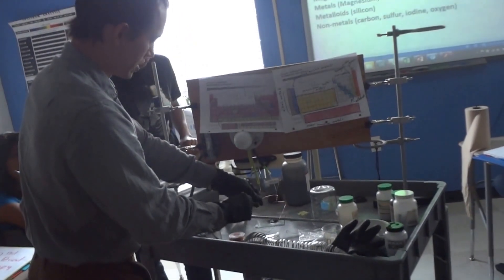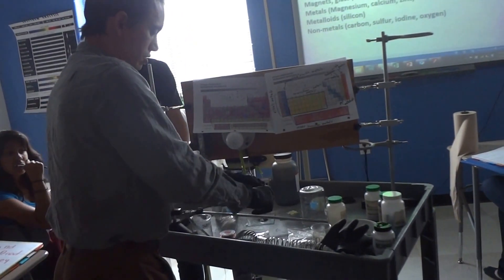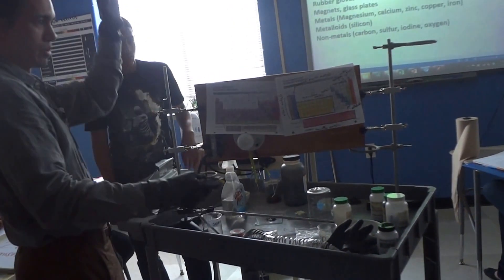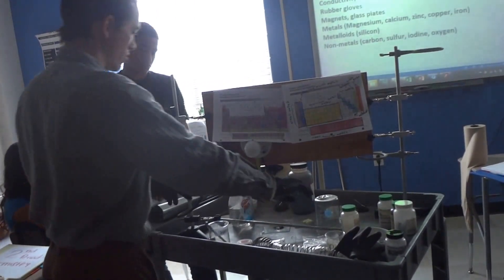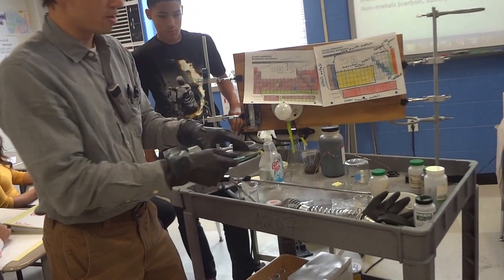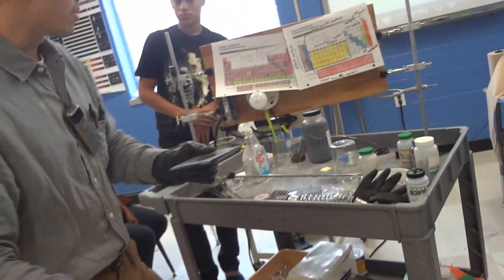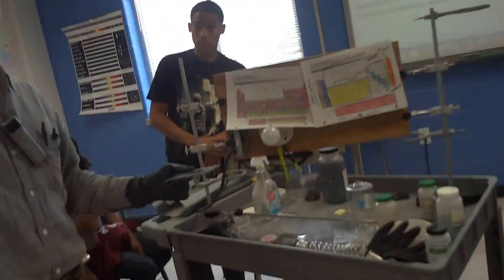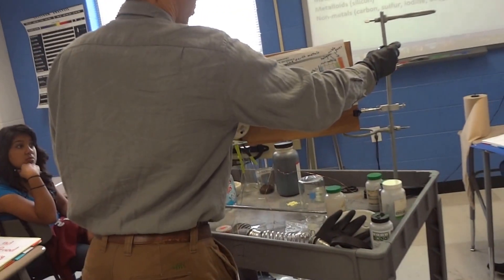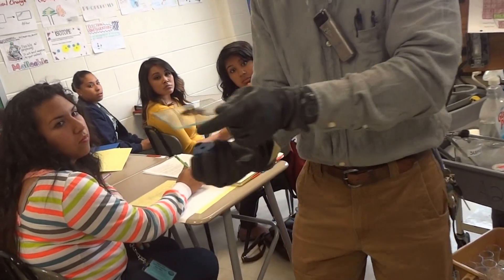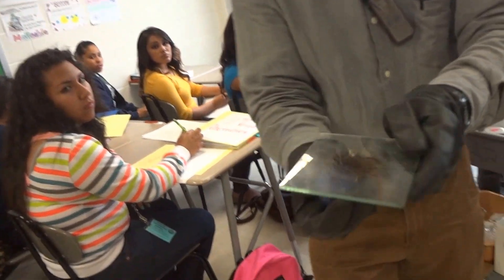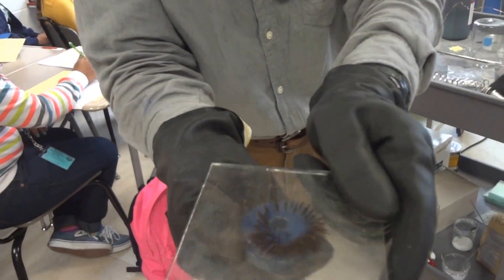Now we're going to test one more property: magnetism. All these metals are good conductors — would they all be magnetic? Let's test it. Here I have iron powder, and I'm going to take this magnet. Watch — it sticks to the steel rod, which has iron in it. When I move the magnet toward the iron powder, it pushes it up and you can move it around. Iron is definitely magnetic.